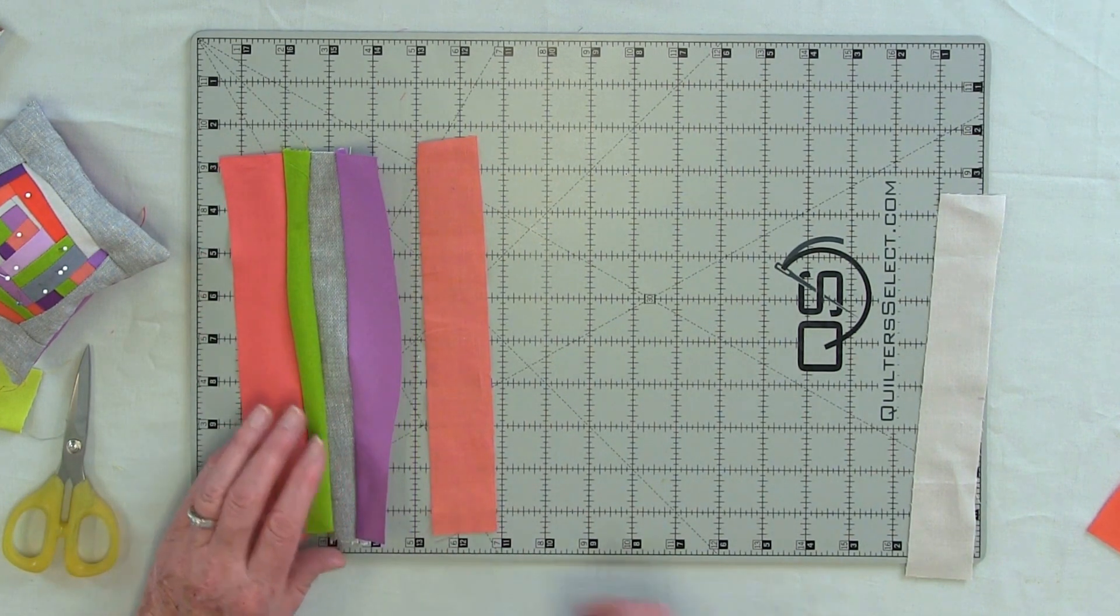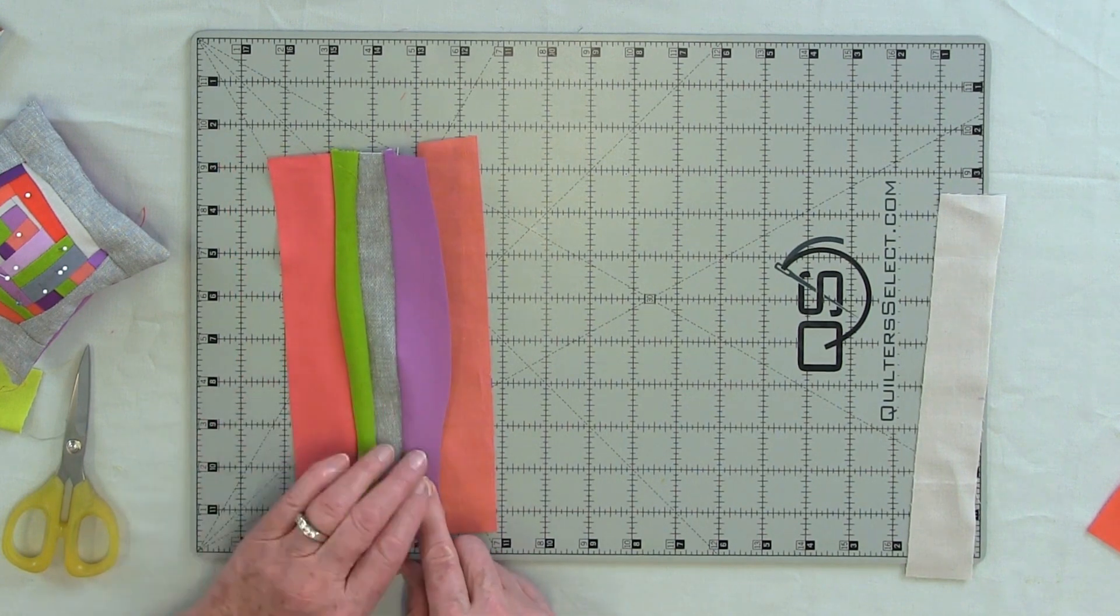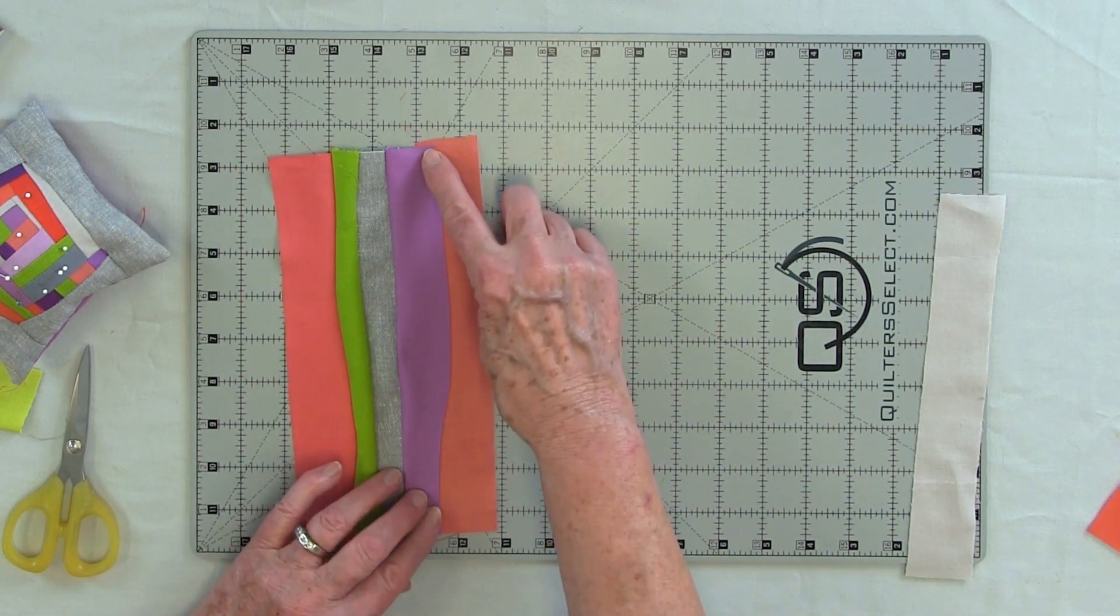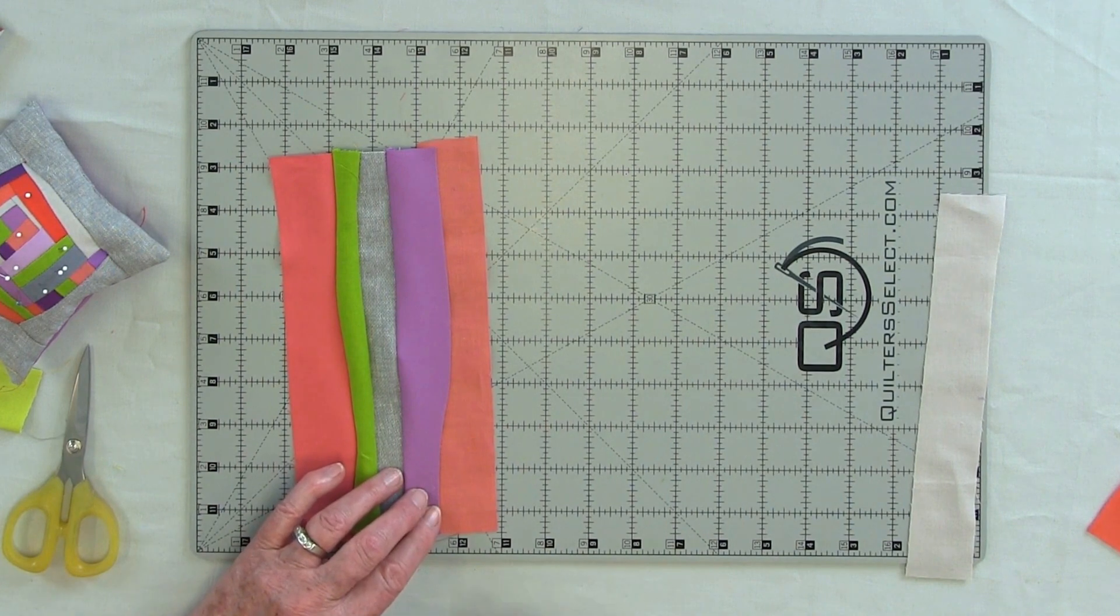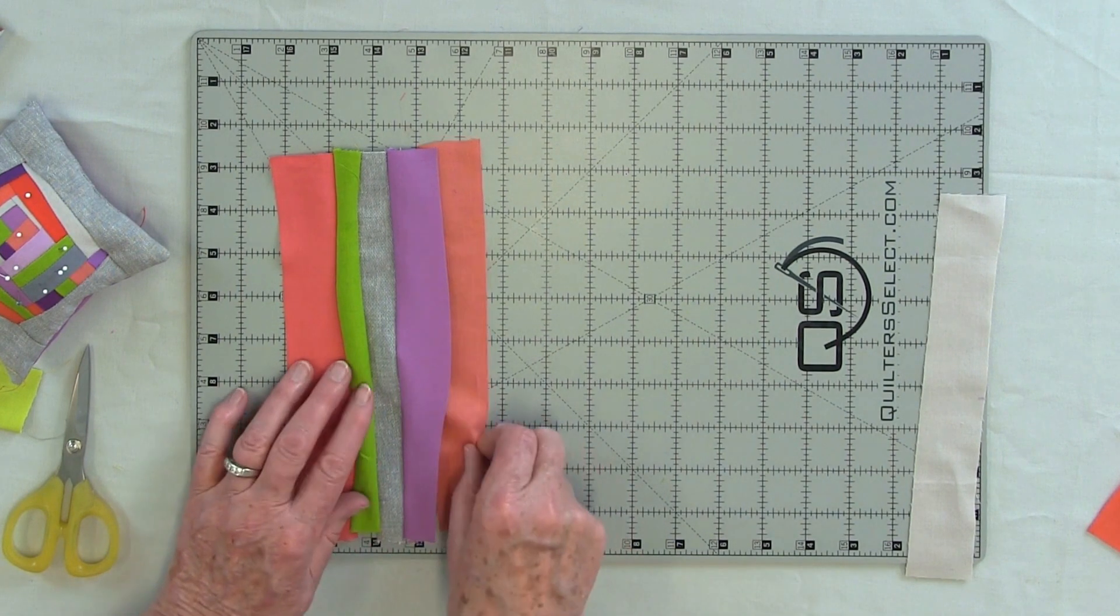You know, had I put the peach color next to the lavender, they're too close in value. So I am going to go ahead and use this piece.